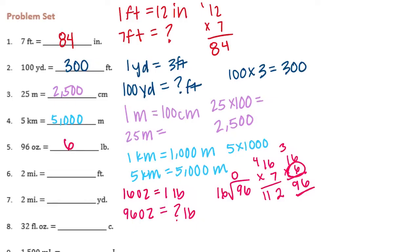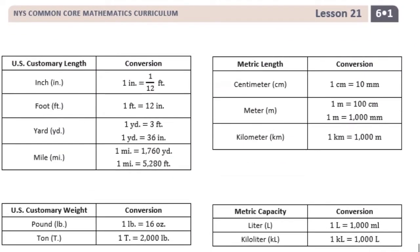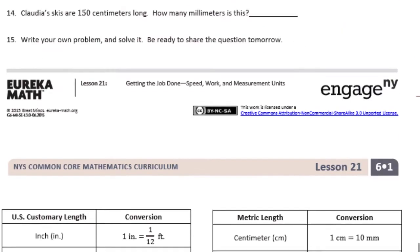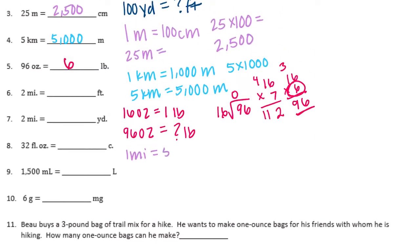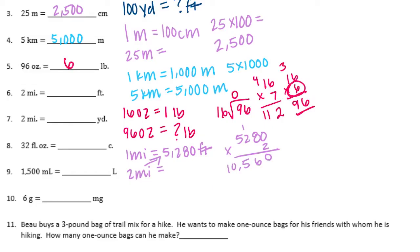2 miles is equal to how many feet? First we need to know that 1 mile is equal to 5,280 feet — let's check the chart, yes, 1 mile is 5,280 feet. So if we want to know 2 miles, we're going to need to do 2 times 5,280, and we get 10,560 feet.